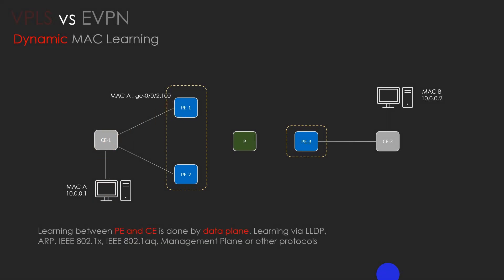Learning between PE and CE is done in the method best suited to the CE data plane — learning via LLDP, ARP, etc. Once the PE learns and checks the source MAC address, it updates the MAC forwarding database. Using BGP family eVPN with route type 2, the MAC address or MAC and IP will be advertised in the control plane to other PEs in the same broadcast domain. Control plane learning enables load balancing for traffic to and from CEs that are multi-homed to multiple PEs, and also load balancing across MPLS via multiple LSPs between the same pair of PEs. This also improves convergence time in the event of certain link failures.